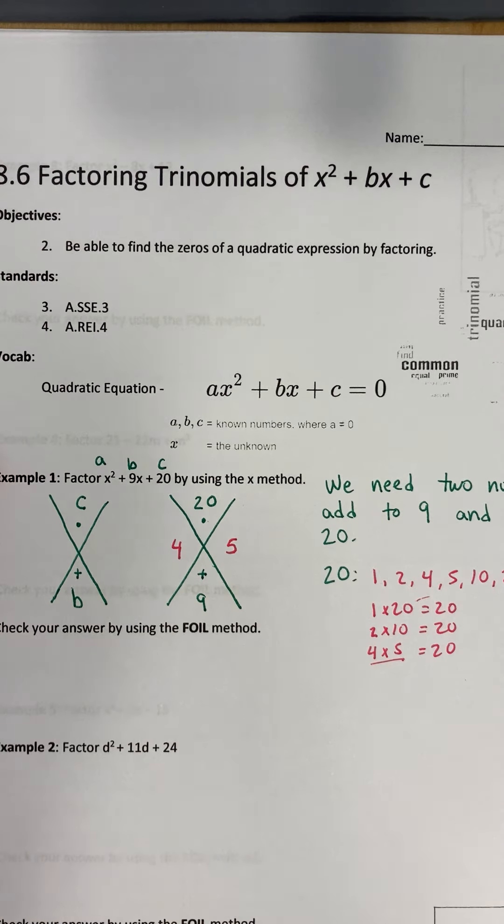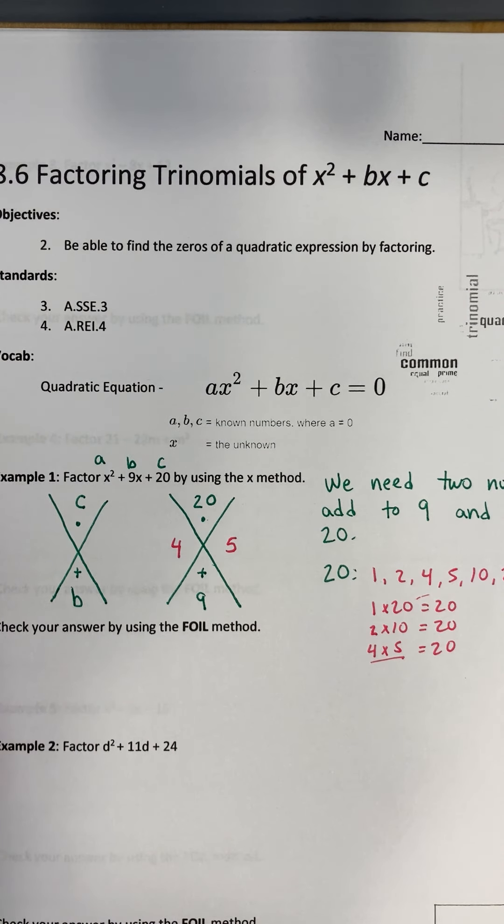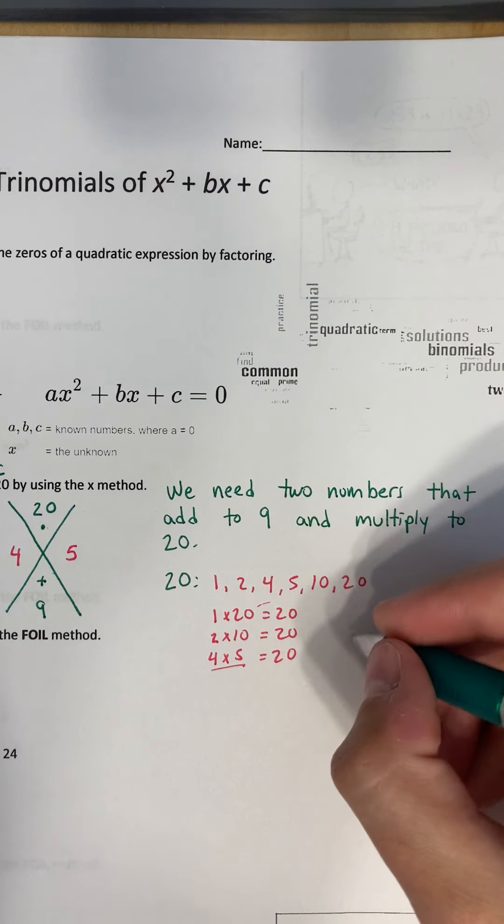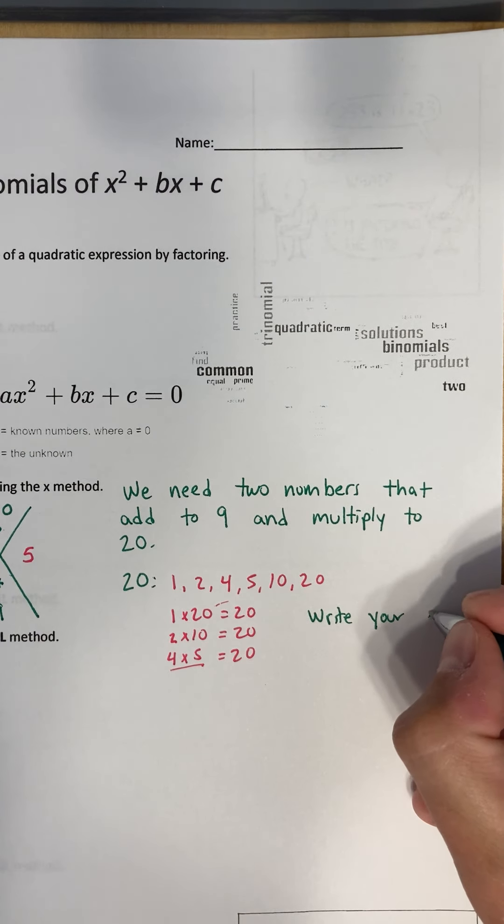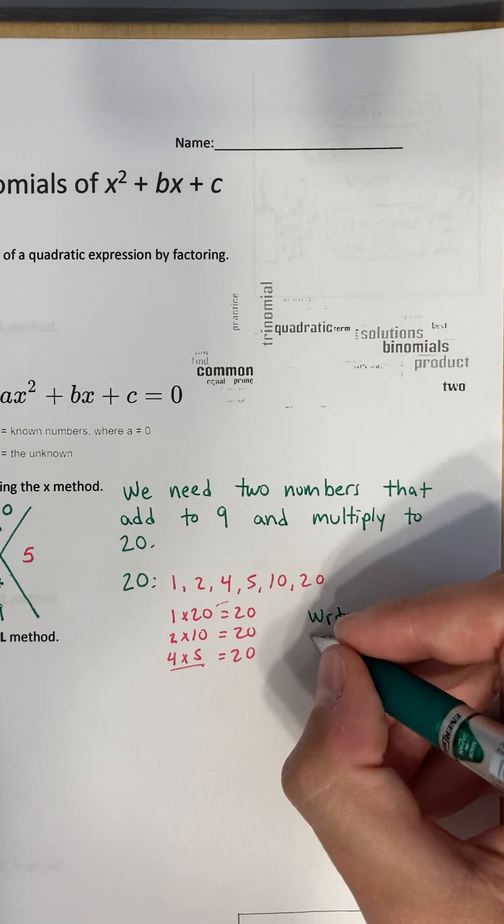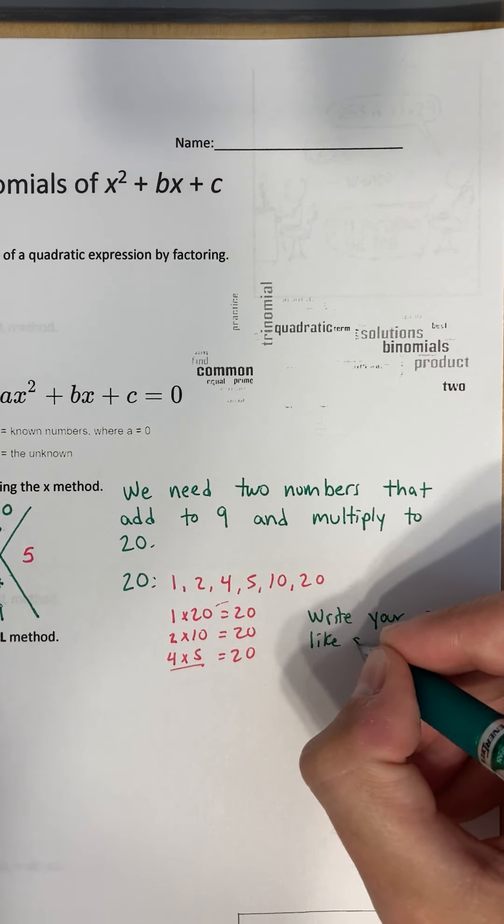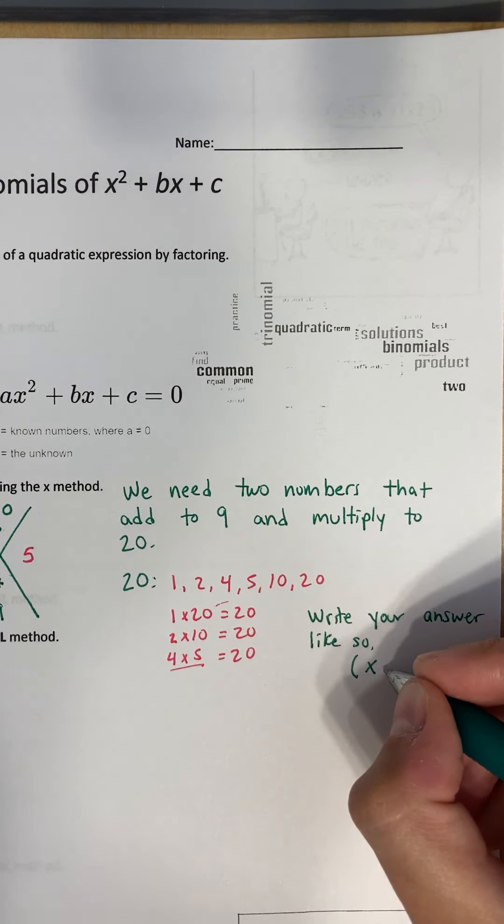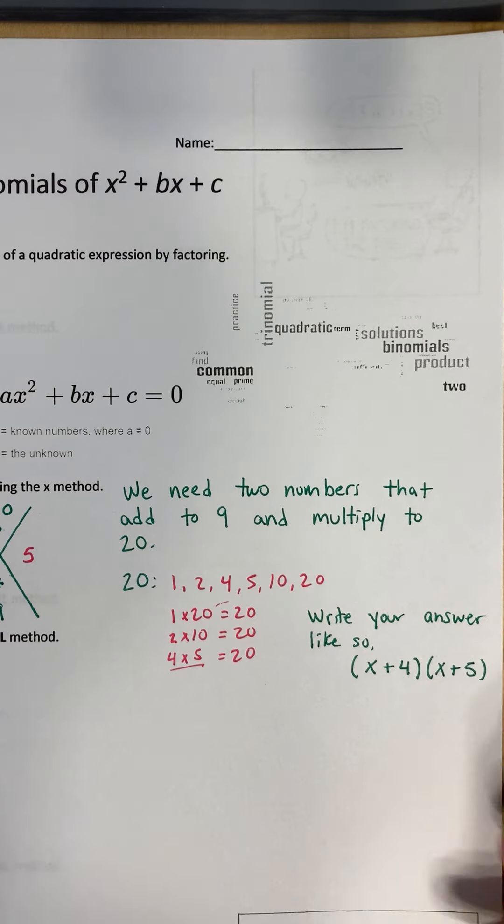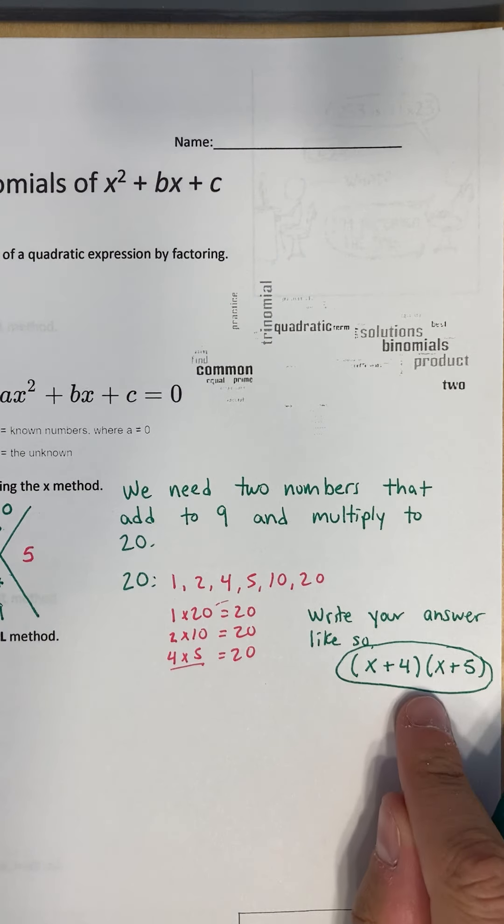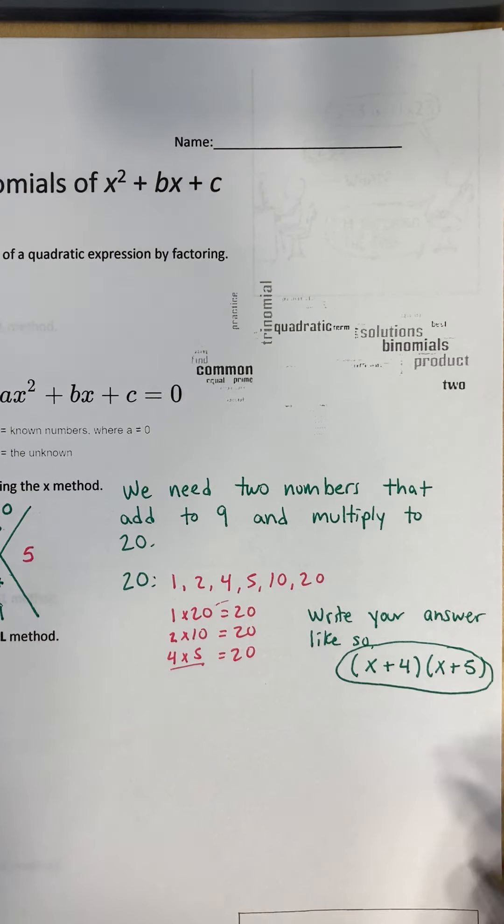So that's fine and dandy. And so now that we found that, we need to write them in a particular way. We are going to write our answer as, let's write it over here. Write your answer like so. So we're going to write x plus 4 and x plus 5. This is your answer. This is how you factor. This is what you get when you're done factoring. You should get something that looks like this.